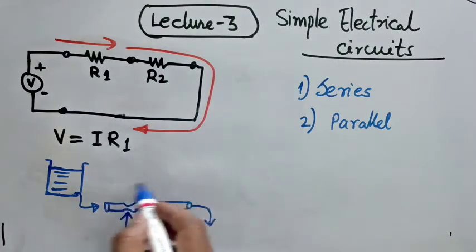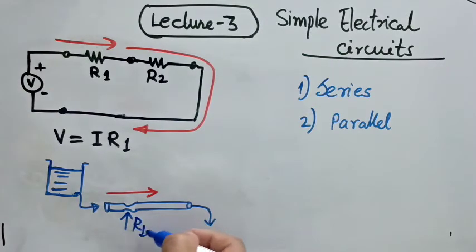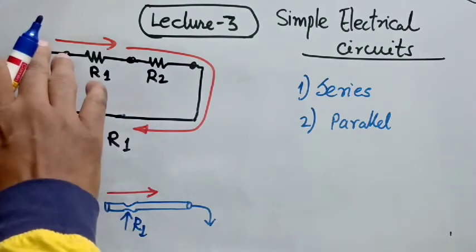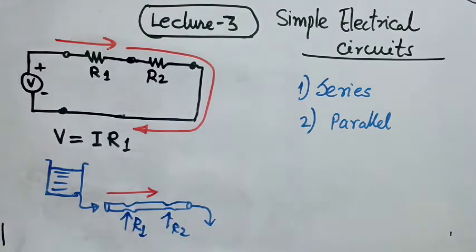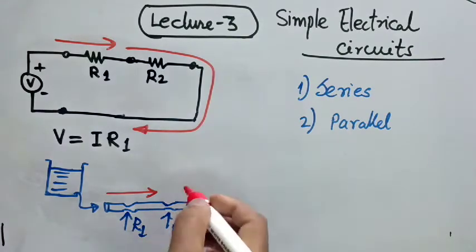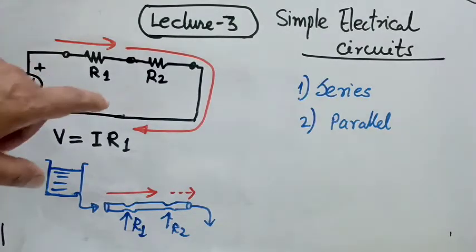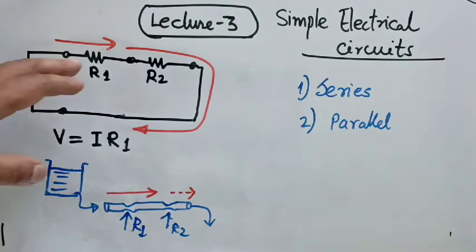Resistance is basically the amount of force you are applying to squeeze the pipe to allow less flow of water. The flow of water is the flow of current, which here is I. So resistance R1 in this case controls the amount of current that flows through the wire. If we apply some more resistance R2, the amount of current that will flow through this pipe will be reduced by the factor R2 as well. This means that if we apply N number of resistances in series, it reduces the current flow through the wire.